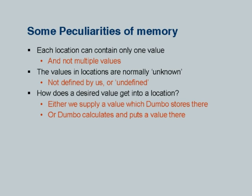Now, how does a desired value get into a location? We emphatically state that either we supply a value which Dumbo stores there — basically describing an input operation — or Dumbo calculates and puts a value there — basically describing an assignment operation. I have found it extremely useful to emphatically state right upfront that there is no other way of getting a value into a memory location. This simple fact, if driven home early, will reduce confusion in the minds of students.